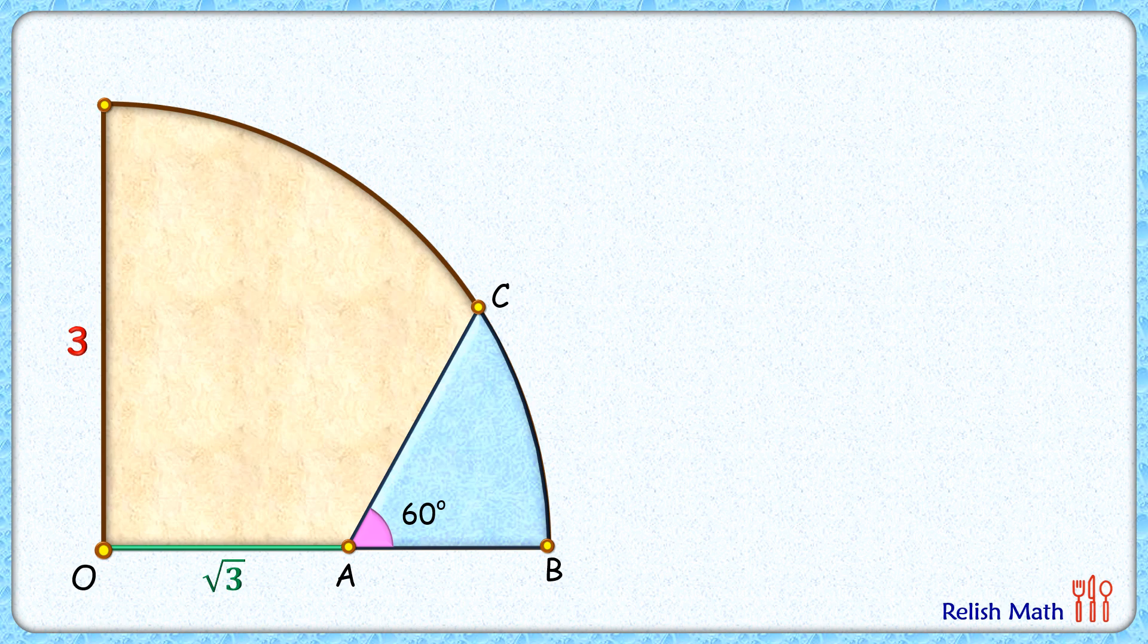Let's check the solution. First, join OC. OC is the radius and thus 3 cm. Now, the area of this blue shaded region which we have to find is nothing but the area of sector OBC minus the area of triangle OAC.